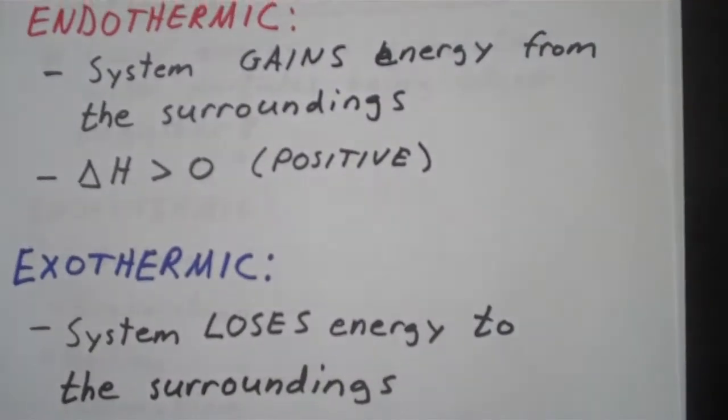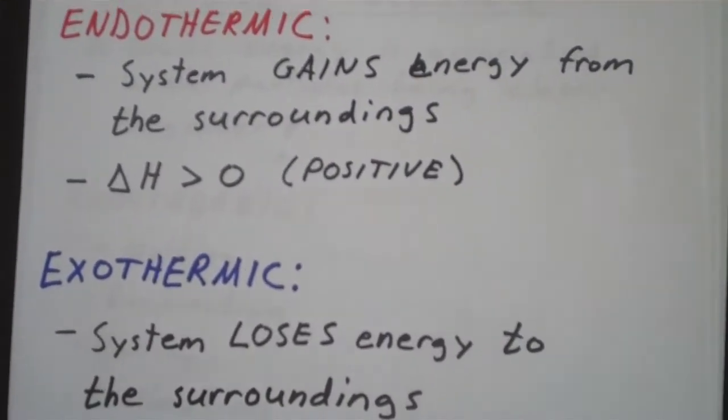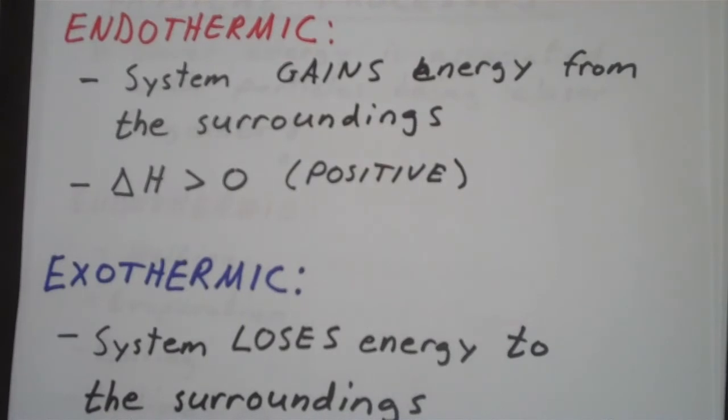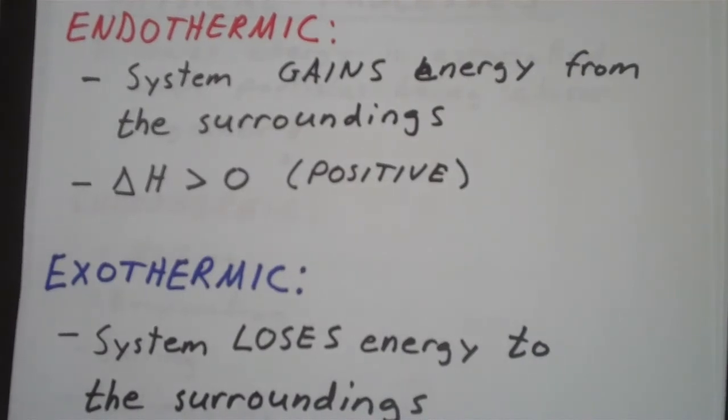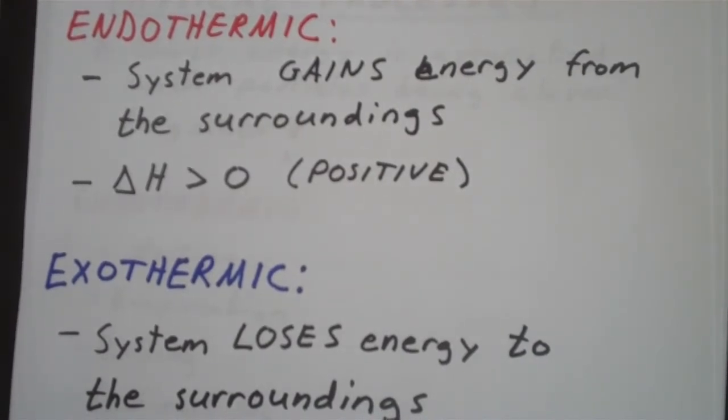An endothermic process is one in which the system gains energy from the surroundings. And in an endothermic process, delta H is greater than zero or is positive.